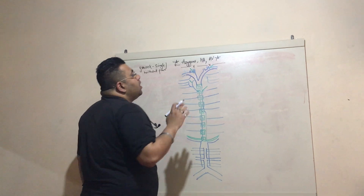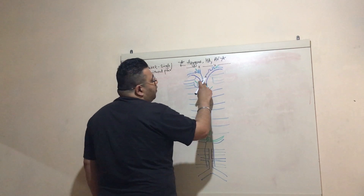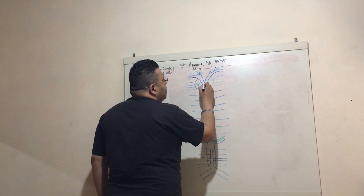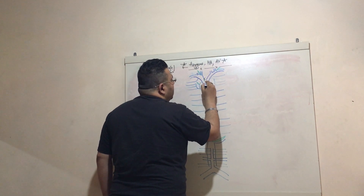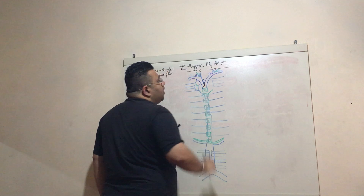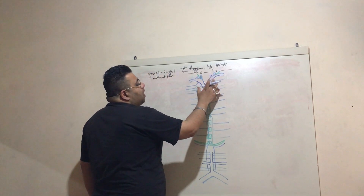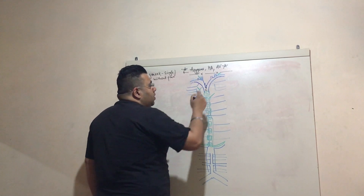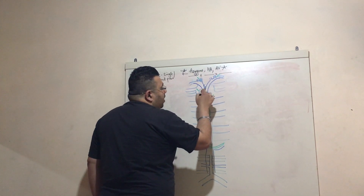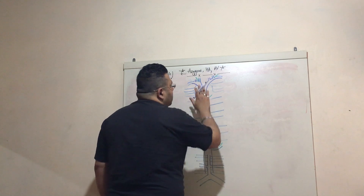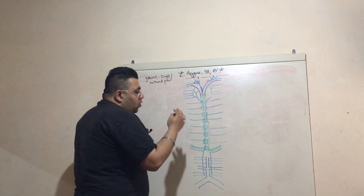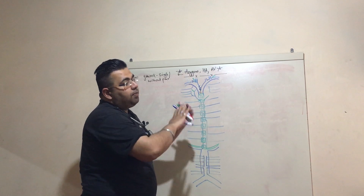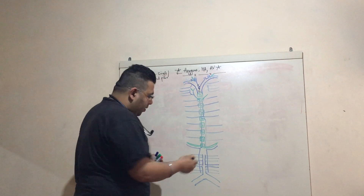The first structure here is the superior vena cava. The superior vena cava, along with the inferior vena cava, drains blood into the right atrium. Somewhere here we will have the right atrium, which I'm not drawing right now.